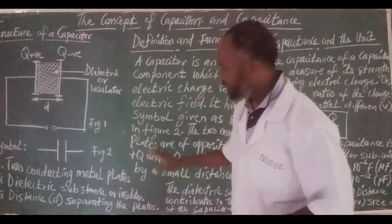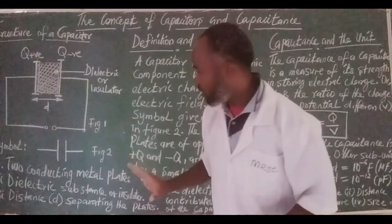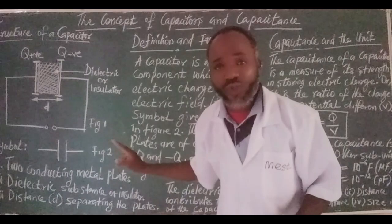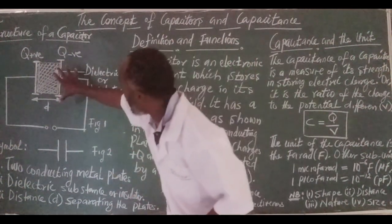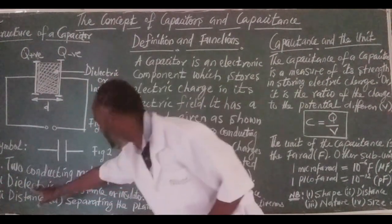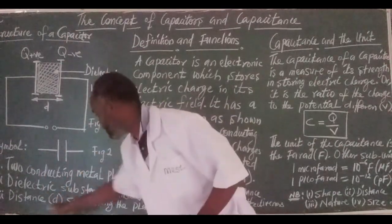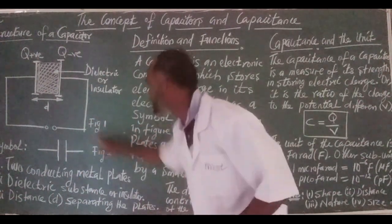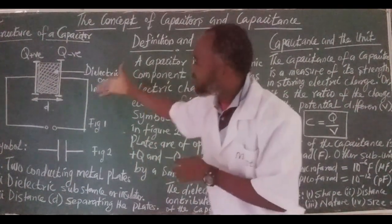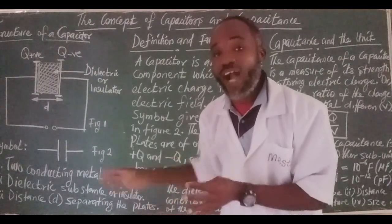The next thing we need to understand is this. The structure here has to do with something very important: two conducting metal plates, dielectric substance or insulator, and distance D separating the two plates. If we understand these simple concepts, the structure, that means we will be able to understand how this functions.